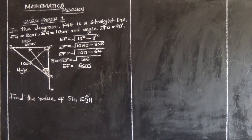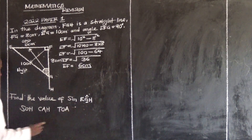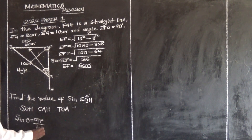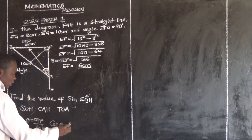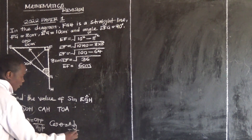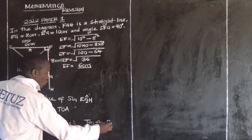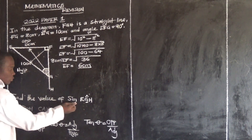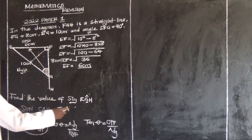They want us to find sine EGF, so we go back to SOHCAHTOA. SOH means sine theta equals opposite over hypotenuse. CAH means cos theta equals adjacent over hypotenuse. TOA means tan theta equals opposite over adjacent. In this case we are focusing on sine, so that is our area of interest to find sine EGH.